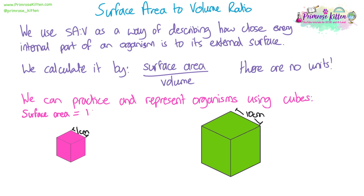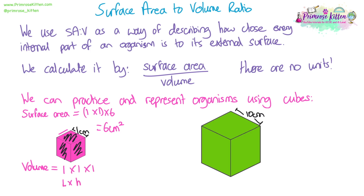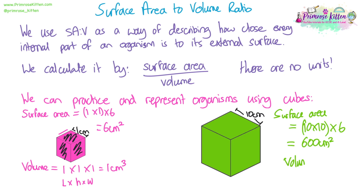I've got two cubes here. For the small cube with a side length of 1 cm, the surface area is 1 × 1 × 6 = 6 cm². The volume is 1 × 1 × 1 = 1 cm³. For the large cube with a side length of 10 cm, the surface area is 10 × 10 × 6 = 600 cm², and the volume is 10 × 10 × 10 = 1000 cm³.